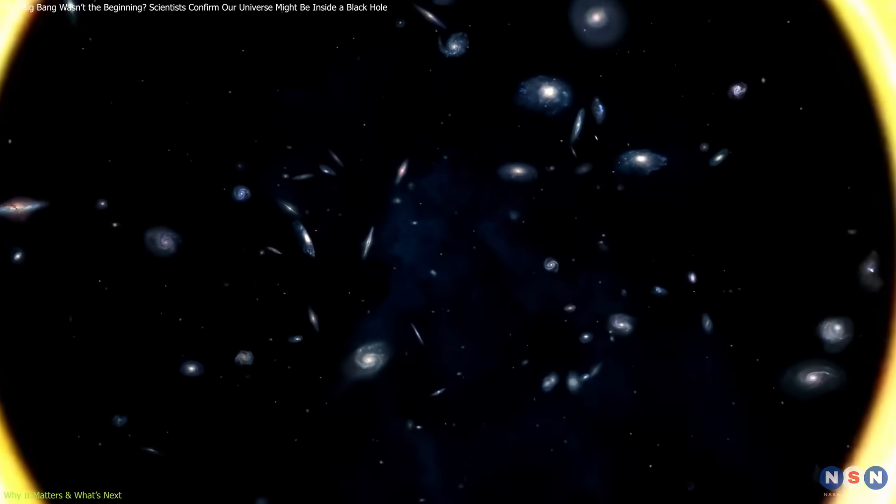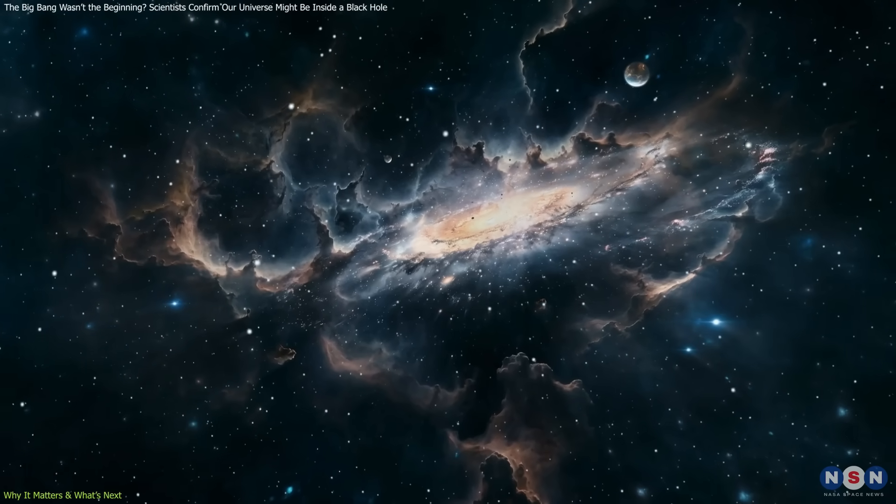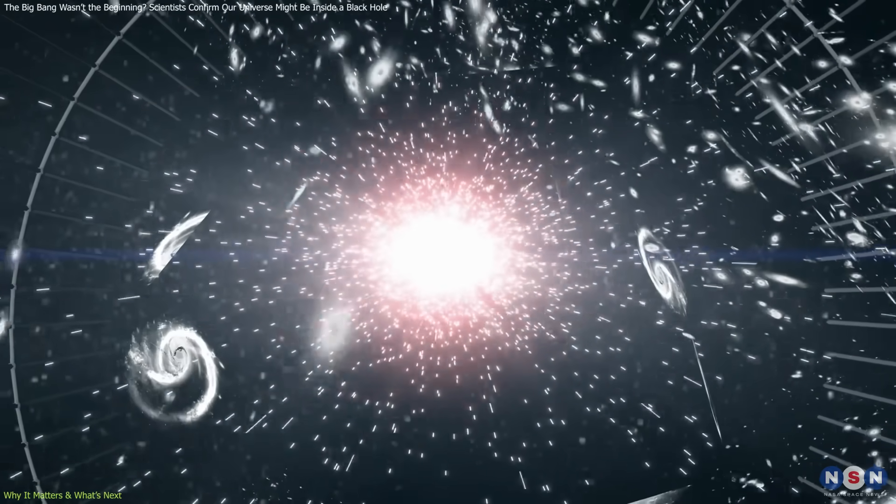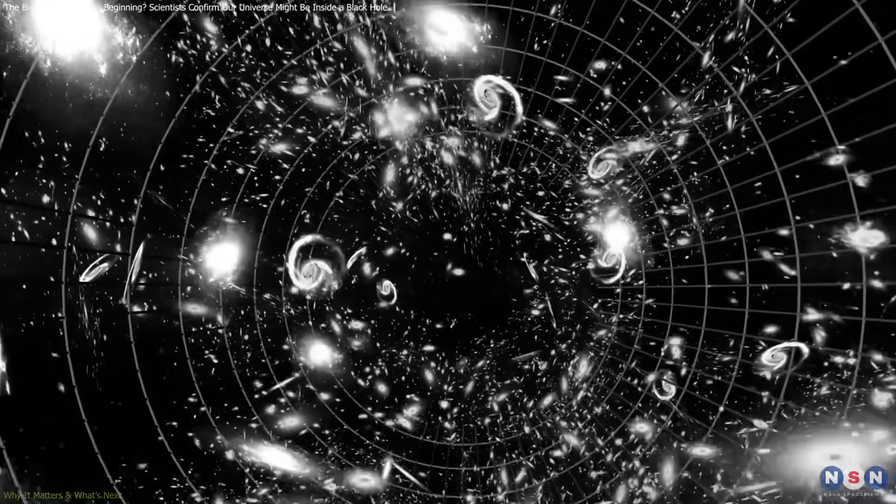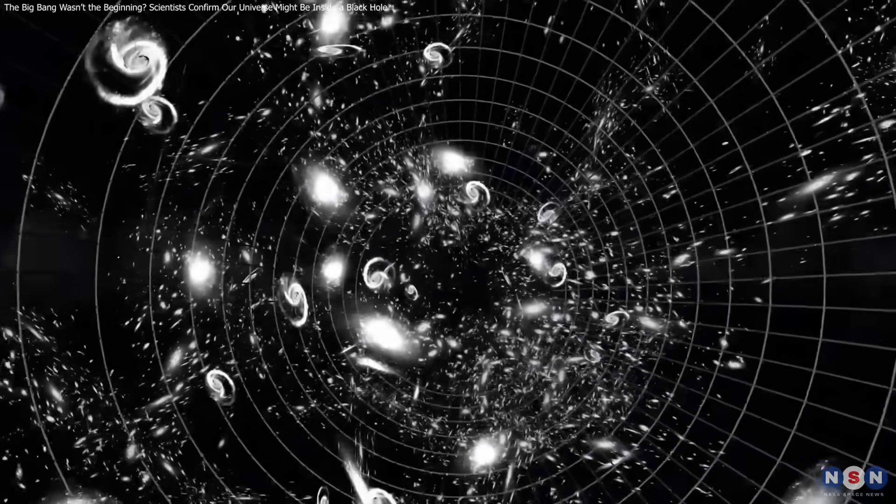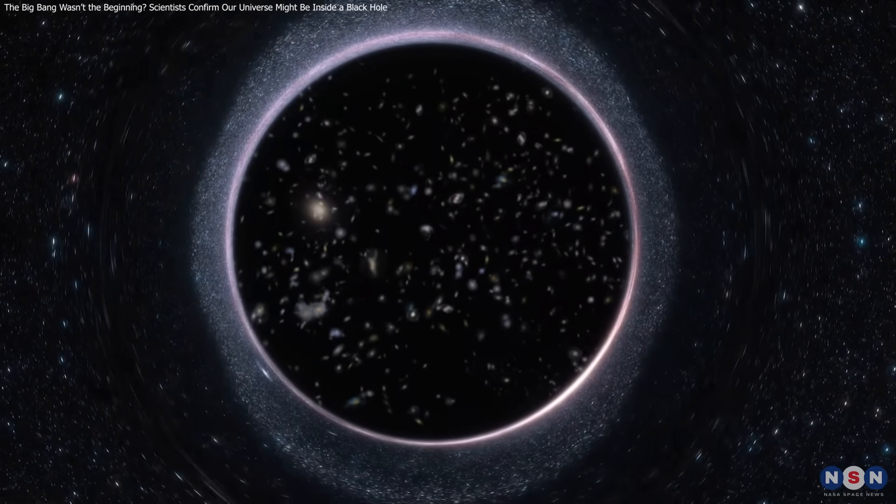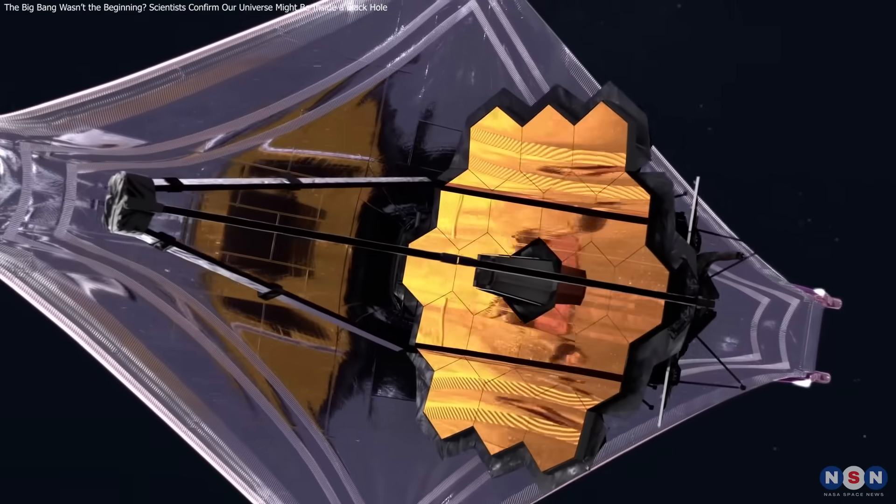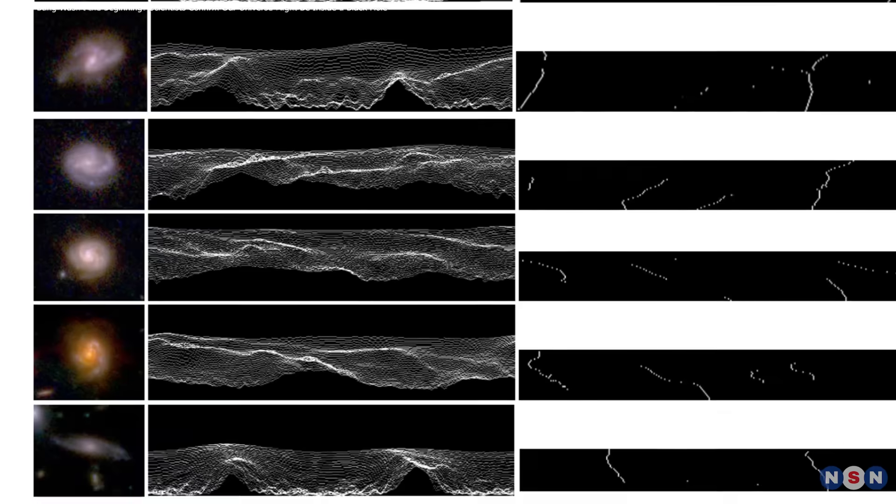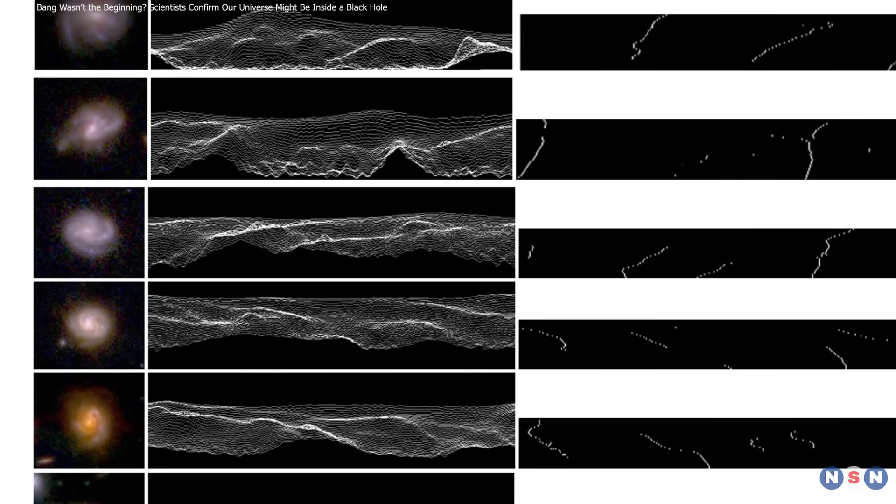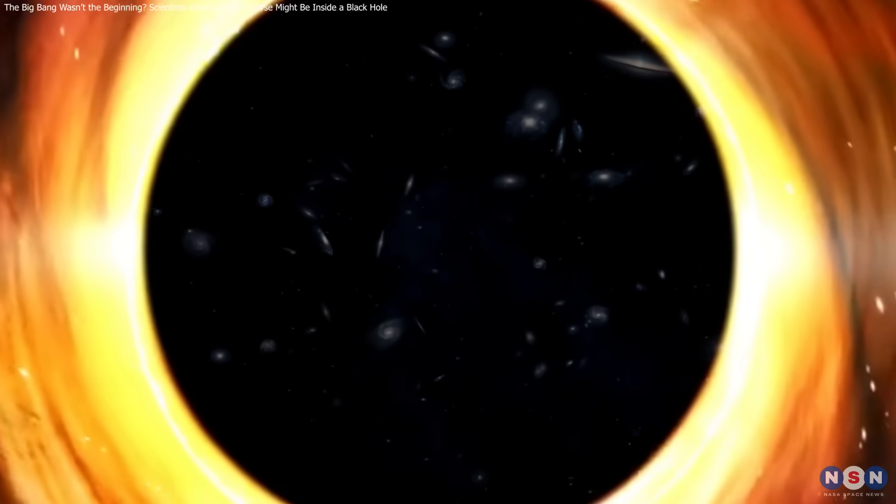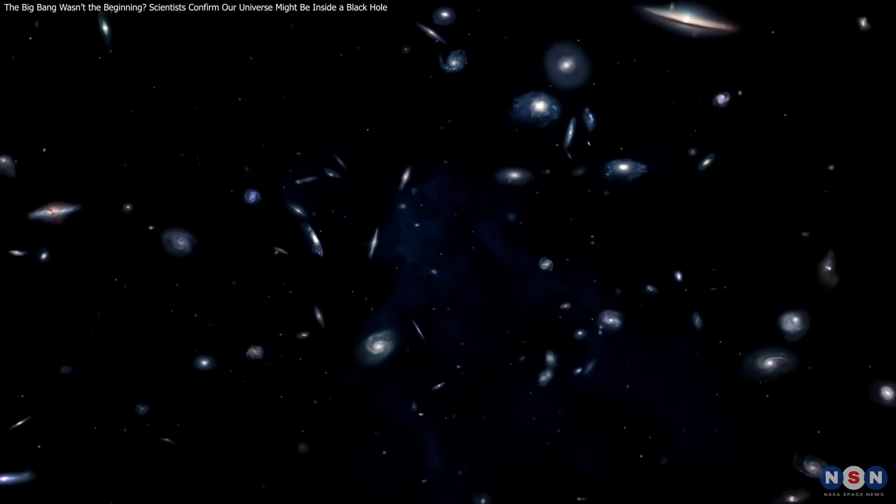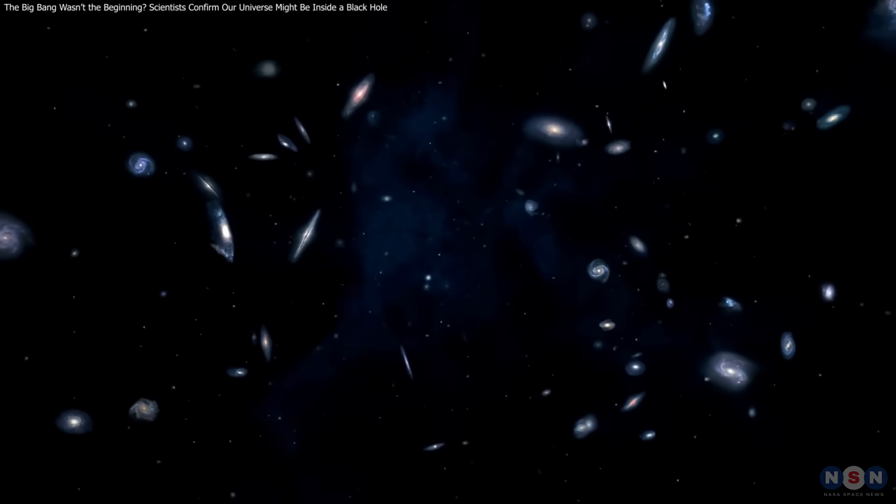Whether or not the universe hypothesis holds up, some data is already reshaping our understanding of the cosmos. It's forcing us to revisit foundational assumptions and explore bold new possibilities for how the universe began and what it truly is. Could our universe be inside a black hole? While the evidence isn't conclusive, JWST's findings suggest it's a question worth exploring. The discovery of galaxies with a shared spin direction hints at a possible alignment inherited from a black hole. As we gather more data, we'll uncover whether this pattern holds. Stay tuned as we challenge our deepest assumptions about the universe's origins and structure.